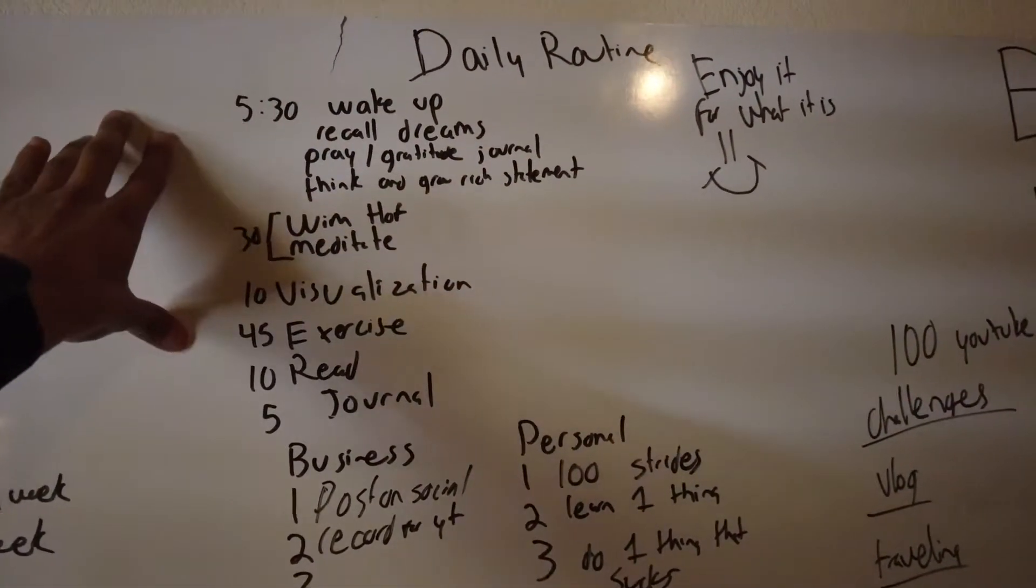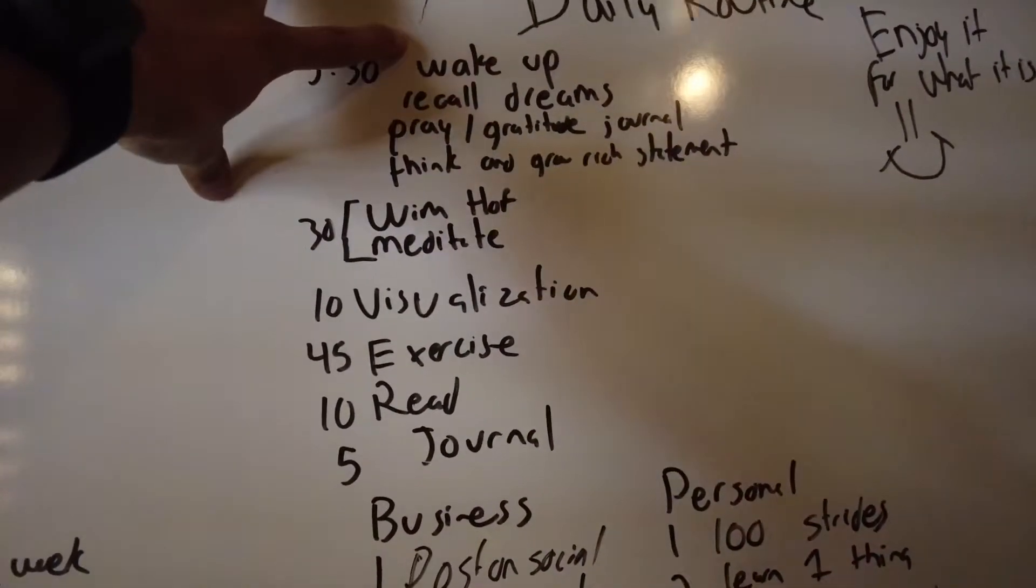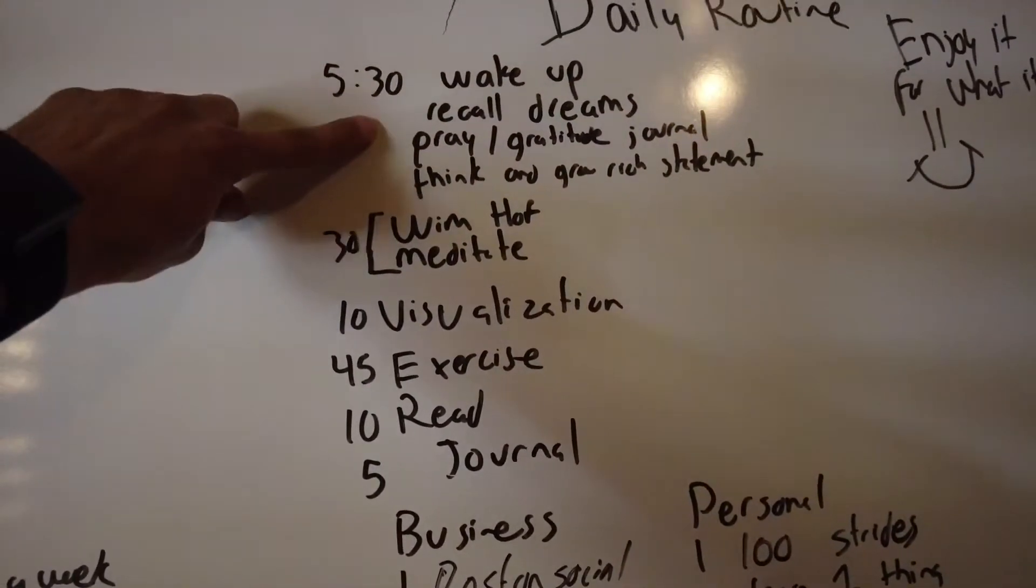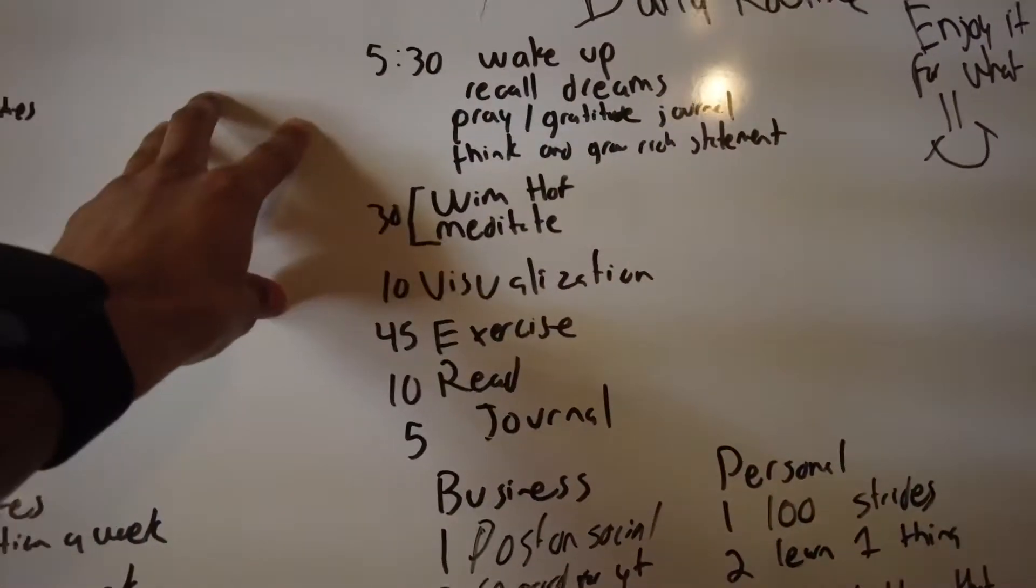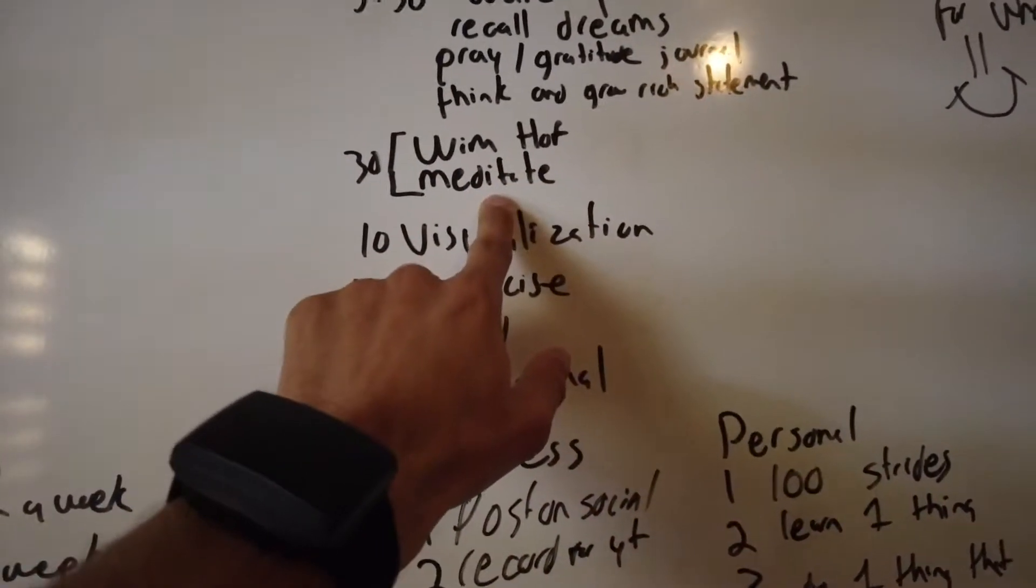This is my everyday daily routine. I try to wake up at 5:30. The first thing I do after I wake up is recall my dreams, then pray, and then do the journal that I just showed you. Then I do the Wim Hof method.